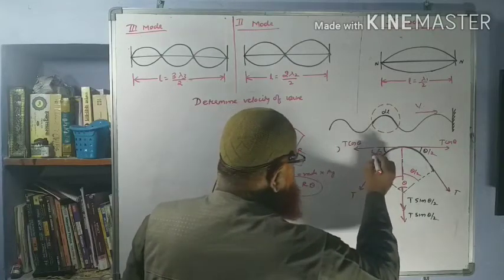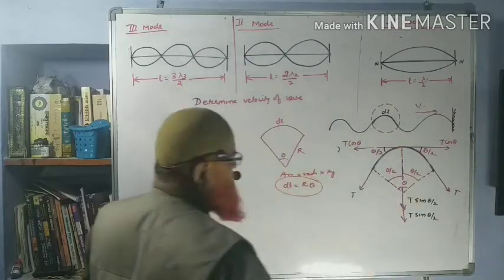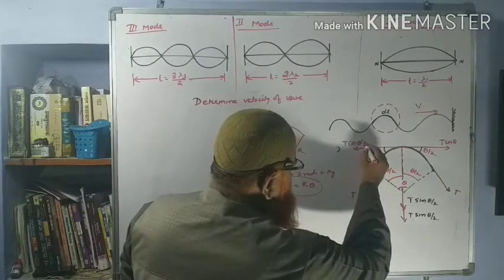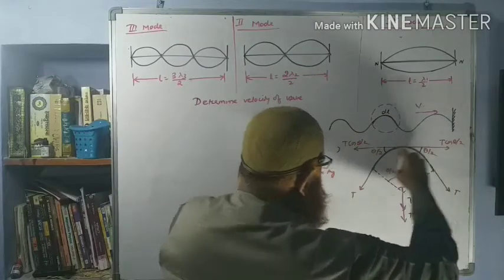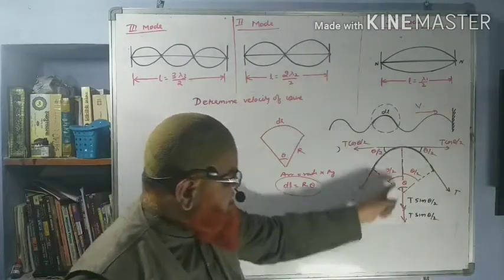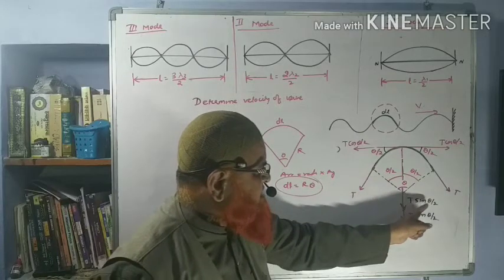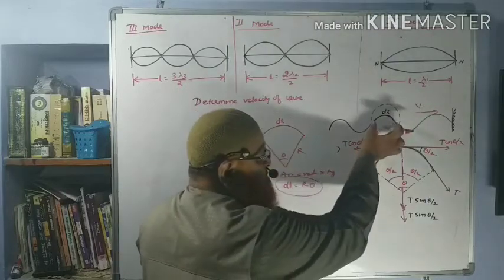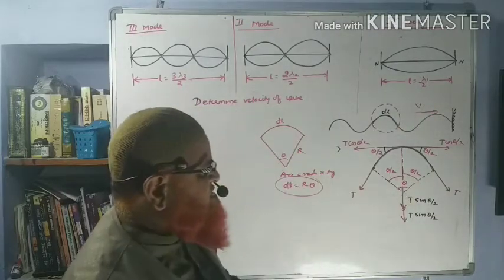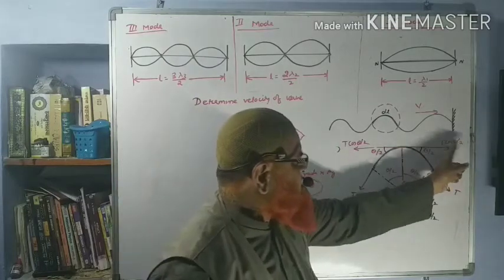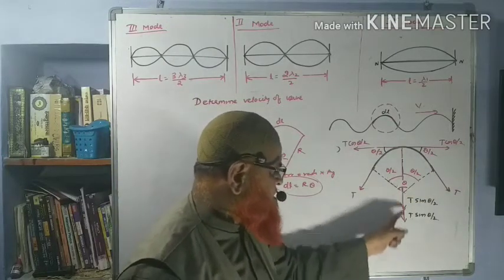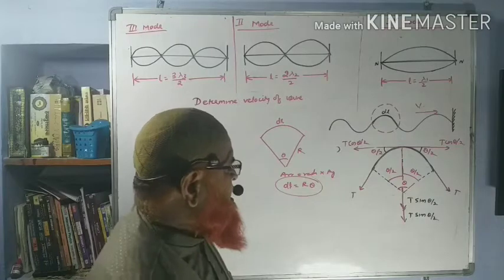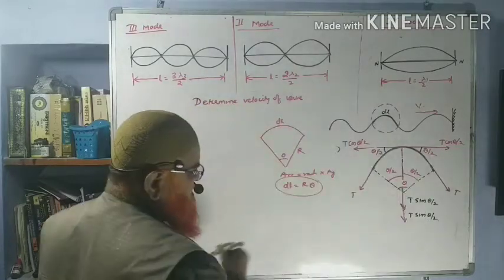Since both angles are theta by 2, we consider the force components. Along the horizontal direction, the components are T·cos(θ/2) and T·cos(θ/2). In the downward direction, the components T·sin(θ/2) and T·sin(θ/2) are acting downwards.